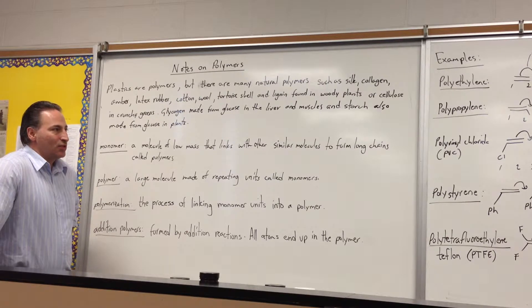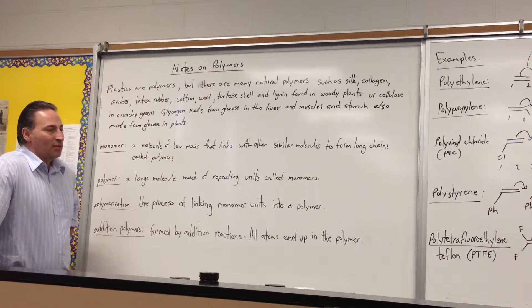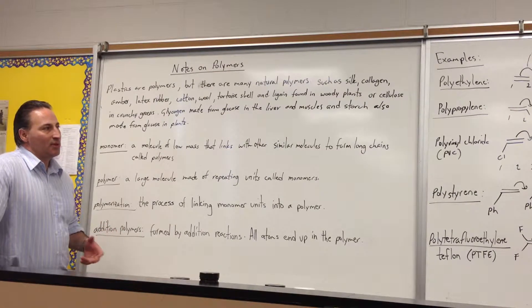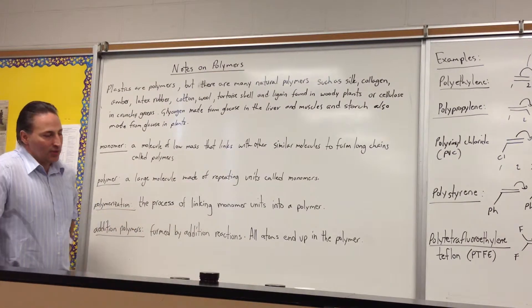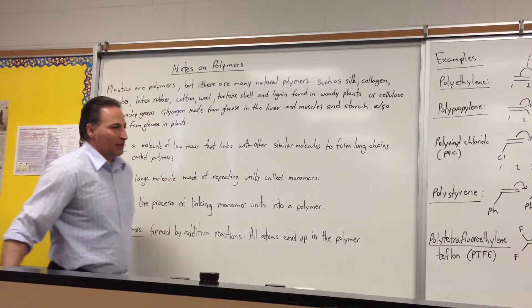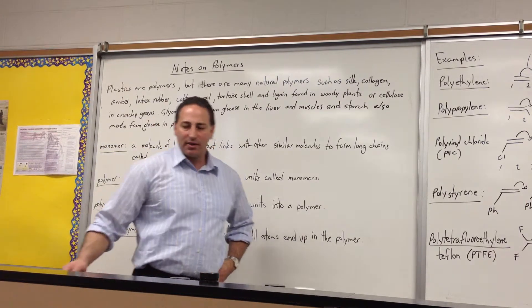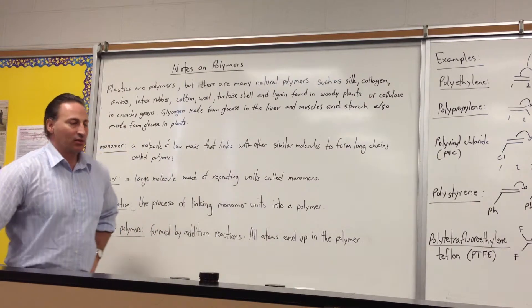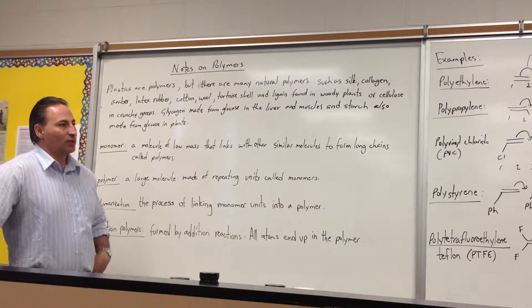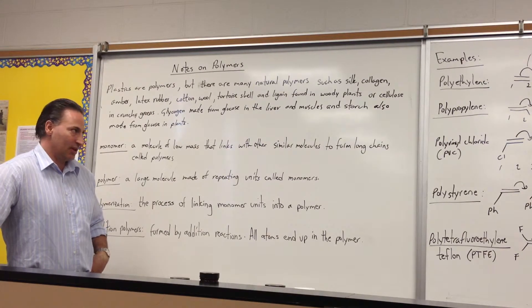For example, if you make dentures, you use methylmetacrylate. That's the monomer. And methylmetacrylate is reacted to form the pink-colored plastic. Of course, methylmetacrylate is colorless. They add some pigment to it to make the plastic look flesh-colored, but it forms a strong plastic that can hold also the artificial teeth to make denture.